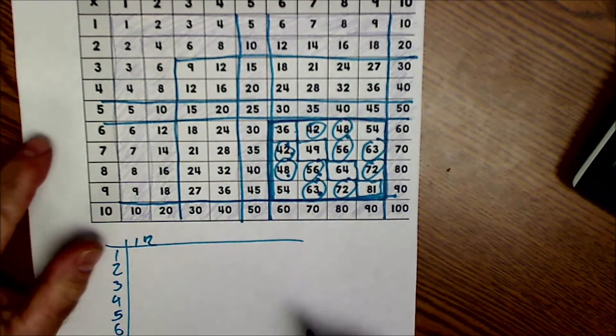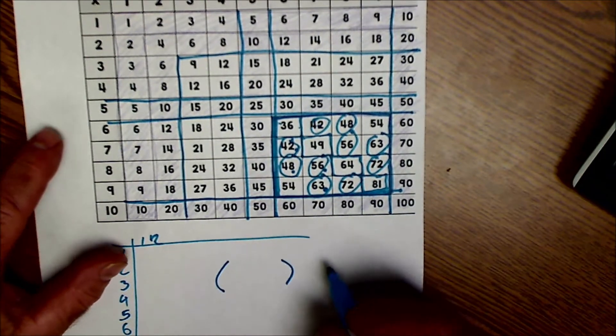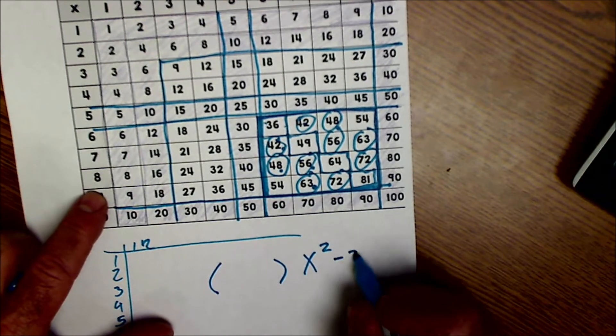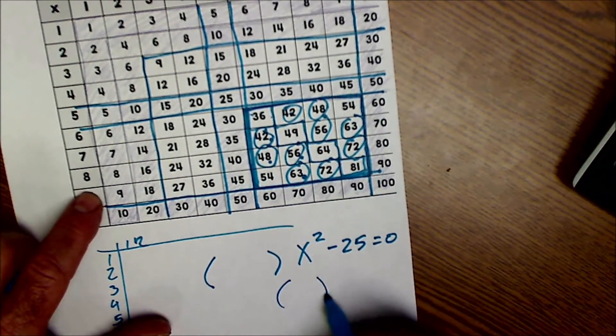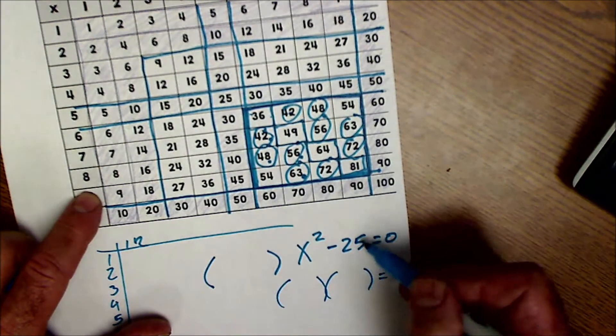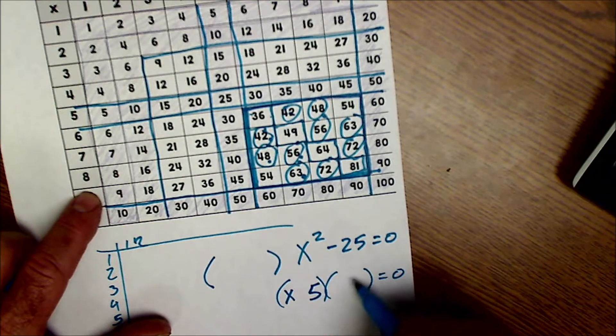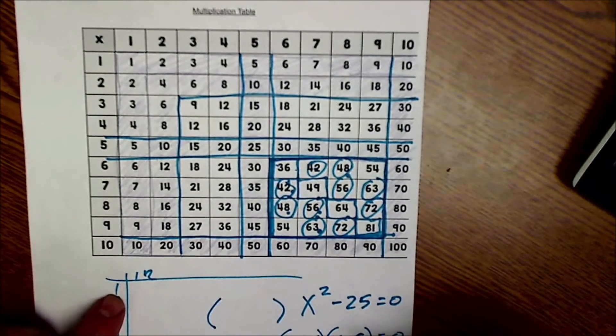I'll just give you an example. If you're trying to learn algebra and you have a function like x squared minus 25 equals zero and they're asking you to solve that, well, it's really hard to factor a number like that unless you know the factors of 25, right? So that's why they say your multiplication tables are so essential to future math classes.